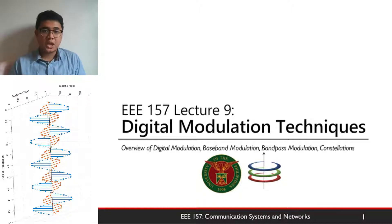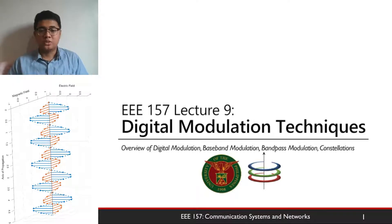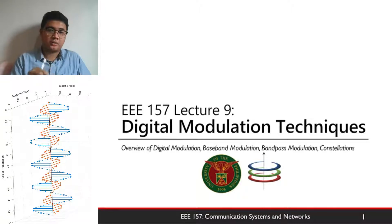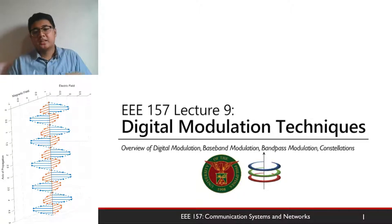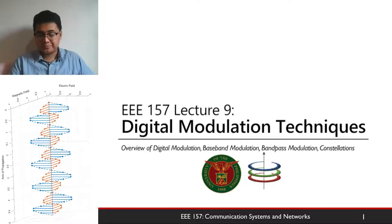In the previous week, we discussed the transition from analog signals to digital signals using the analog-to-digital conversion process, which is a three-step process. For this week, we'll focus on how we take those bits from the analog-to-digital conversion process and transmit them safely over a wired or wireless channel. That is how digital modulation works — you take a bit sequence and transmit it over a channel.